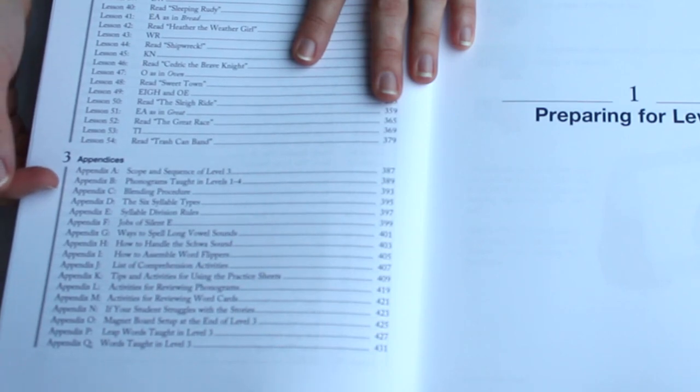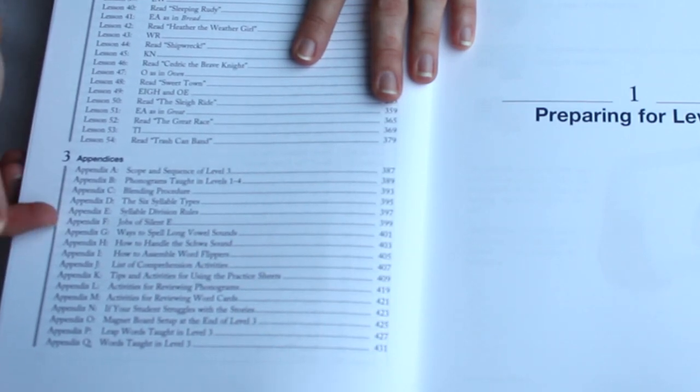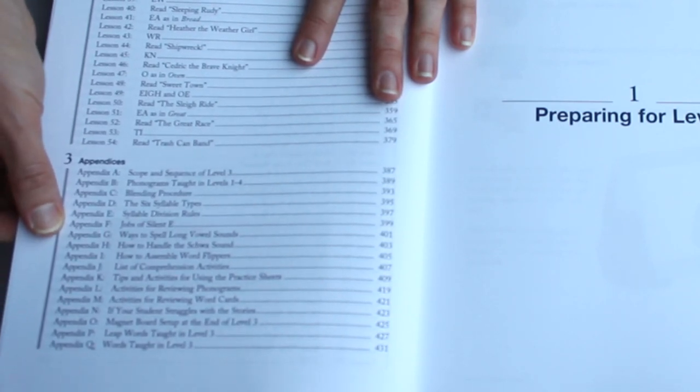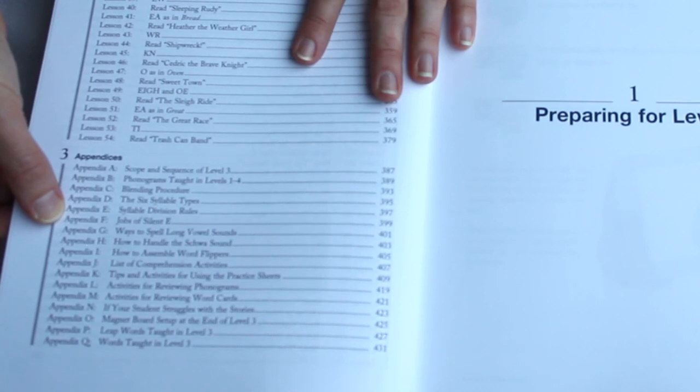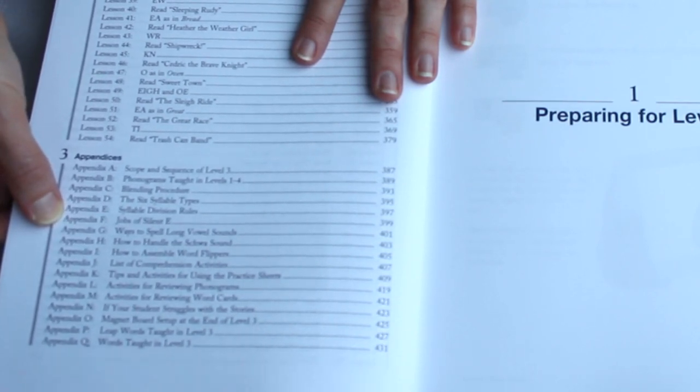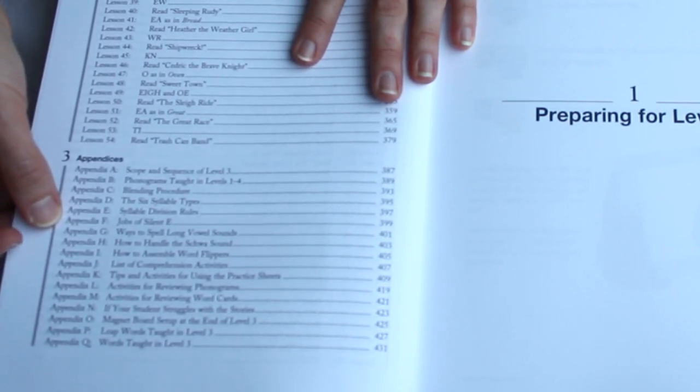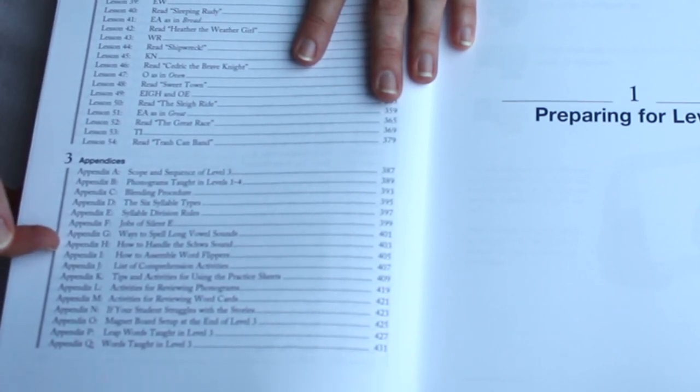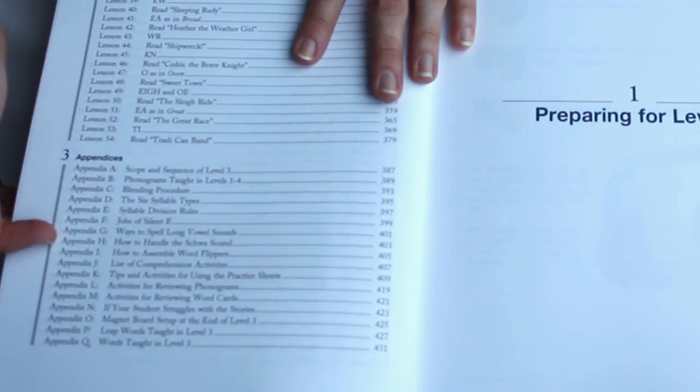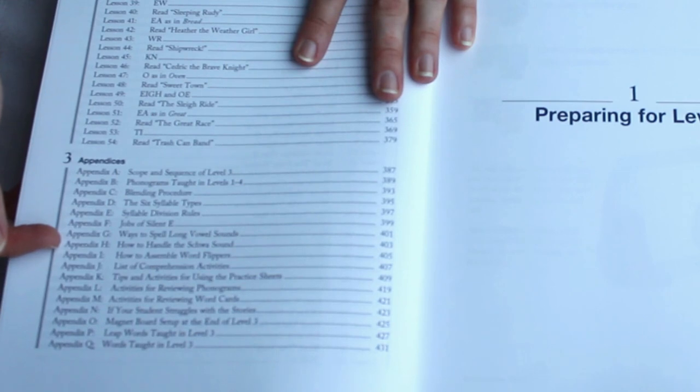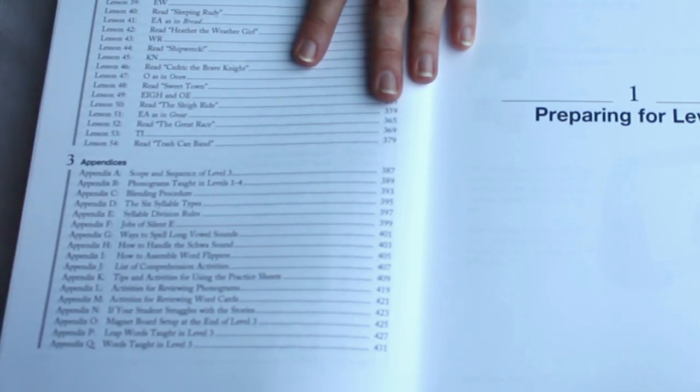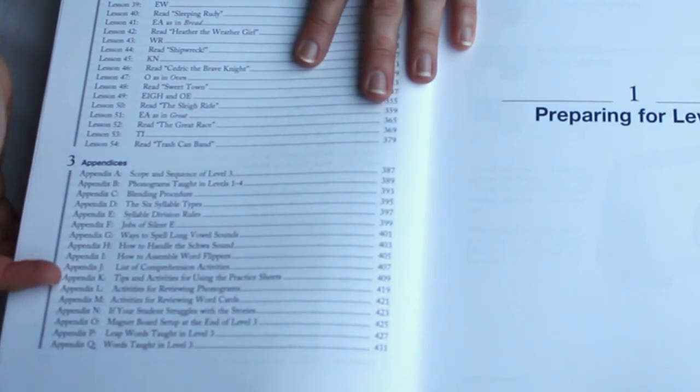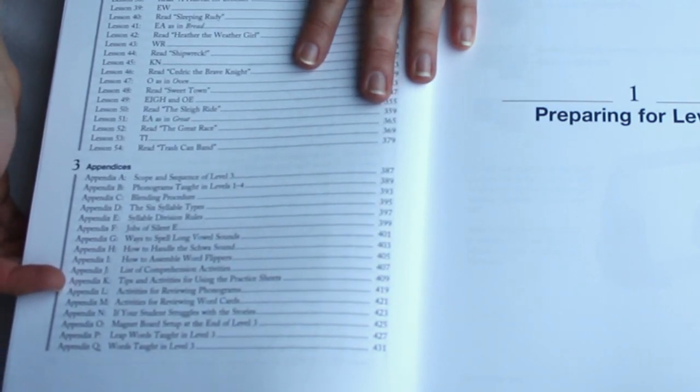Part three is the appendices. And these are really useful. If you're just starting with All About Reading, make sure you look at these before you start. Even if you are continuing with All About Reading, take another look at these. See what you can find that would be useful. Because there are things like the syllable division rules, the jobs of silent E, these things you should laminate. You can also get these in the activity book, so you can pull them out and laminate them. Then it talks about how to handle the schwa sound, which is really useful. Because I have a hard time explaining that to my kids. Why is it problem instead of problem?